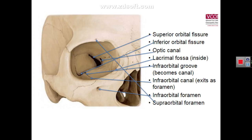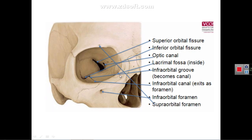One point to add: some textbooks consider that the most posterior part of the floor of the orbit is formed by the orbital plate of the palatine bone. So some textbooks report that the floor is formed by the zygomatic bone, maxilla, and posteriorly by the orbital plate of the palatine bone.